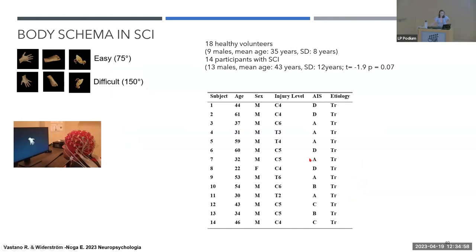We performed a laterality judgment task. Participants were instructed to attend stimuli that could be body-related — a hand or foot — or non-body-related. Stimuli were oriented at two rotation angles: an easy rotation of 75 degrees or a difficult rotation of 150 degrees. Participants had to respond verbally as fast as possible whether the stimulus was a left or right stimulus. We recorded vocal reaction time, accuracy, and EEG signal.